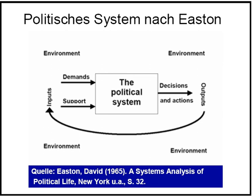Step 1: Changes in the social or physical environment surrounding a political system produce 'demands' and 'supports' for action or the status quo, directed as 'inputs' towards the political system through political behavior.